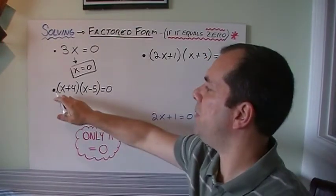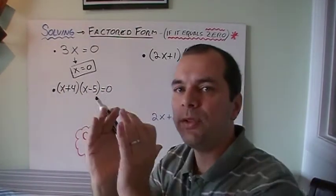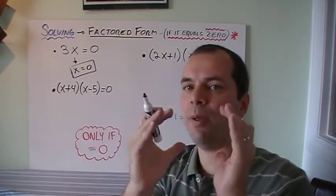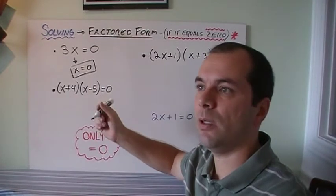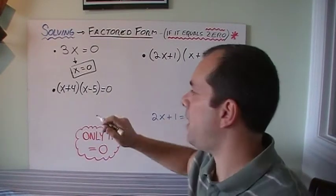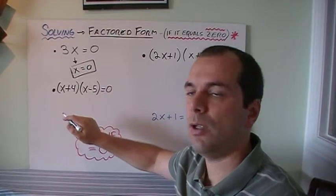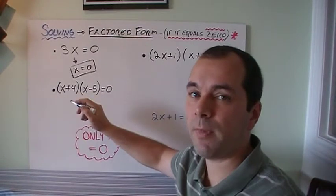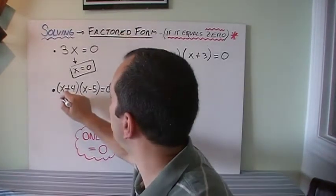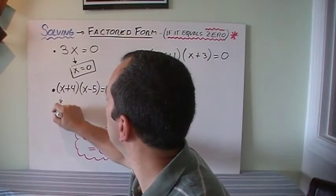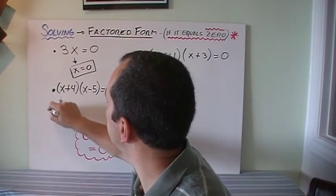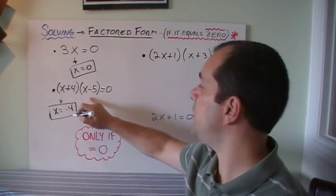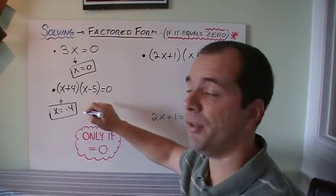Now if I have this as an example, x plus 4 and x minus 5, those are two brackets that represent one number each. This number multiplied by what number will give me 0? Only 0. So I need to make this bracket equal to 0. Which value will x take so that x plus 4 gives me 0? That's minus 4. So x equals minus 4 in this case. And in this case, x equals positive 5 because 5 minus 5 equals 0.